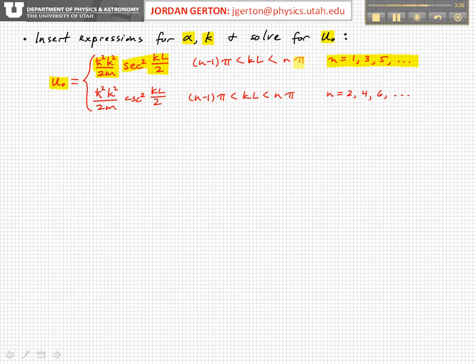Now for the odd values of n, we have a similar solution, it's just that now we have the cosecant function. And again, it's valid in a periodic way, so when kL is less than n pi, greater than n minus 1 pi, but now the n's are even.